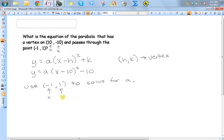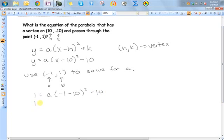And the way I'm going to do that is I'm going to substitute this in for x and this in for y. Okay, so 1 = a(-1 - 10)² - 10.